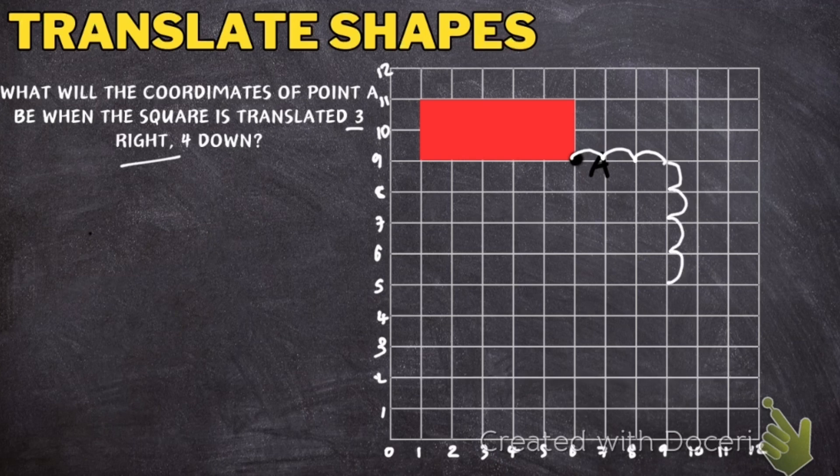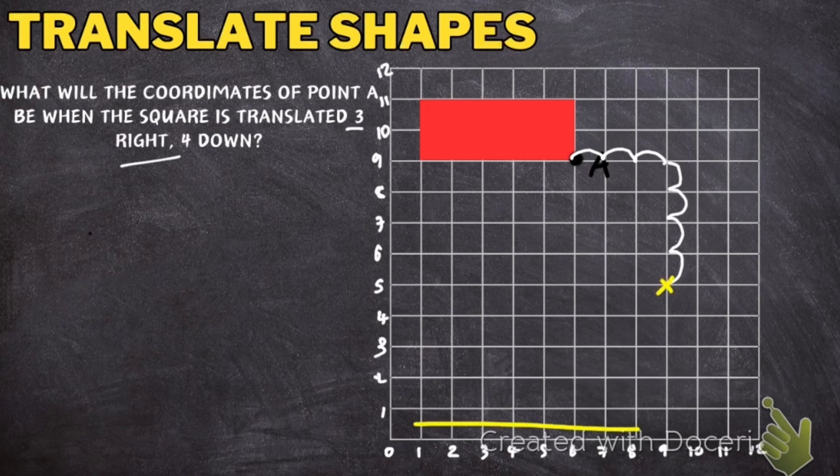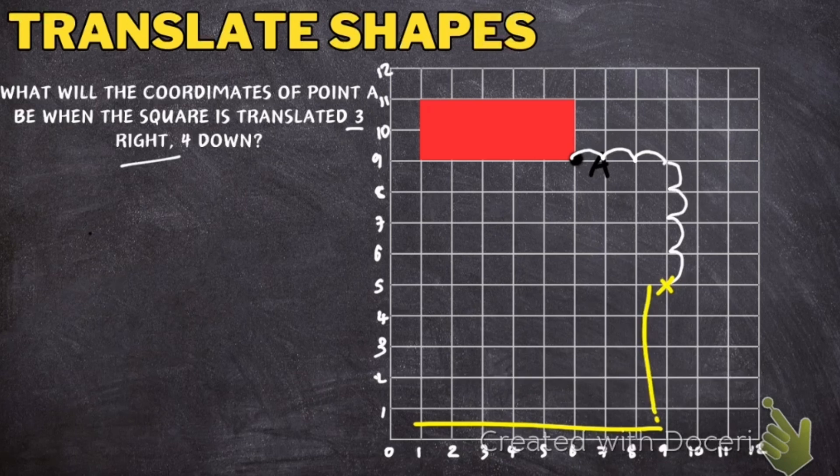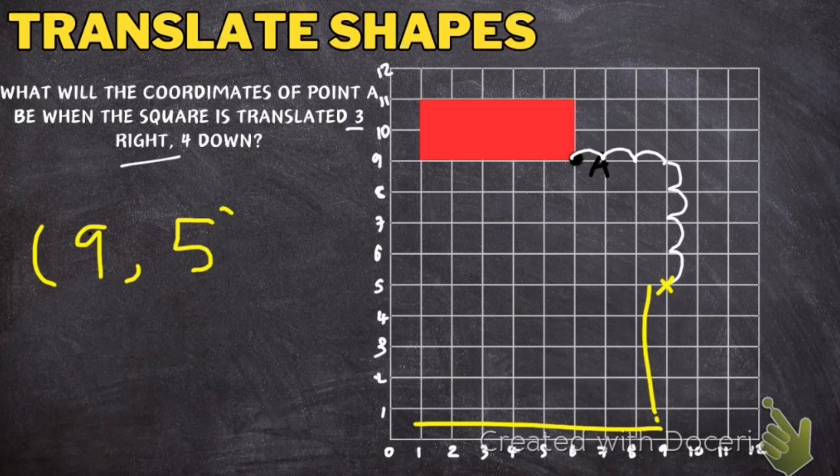So that's where the new point A is going to be where I've put that yellow X. So that's going to be 9 across and 5 up. So the new coordinates for A is going to be 9 across and 5 up.